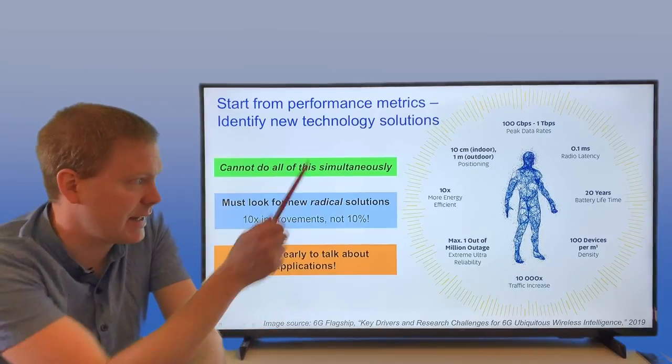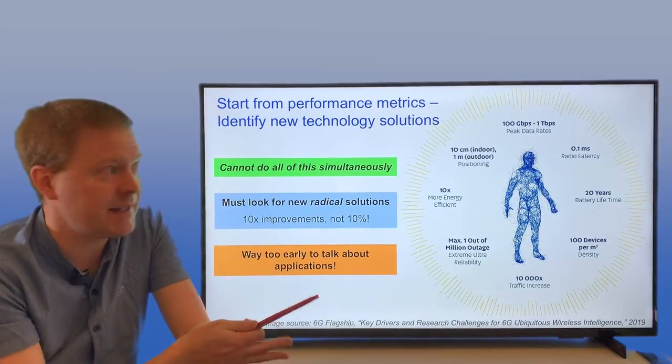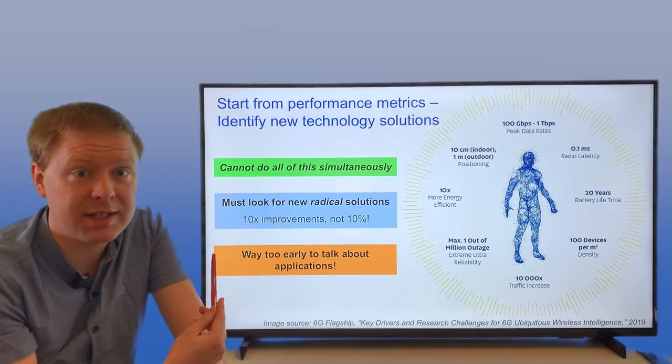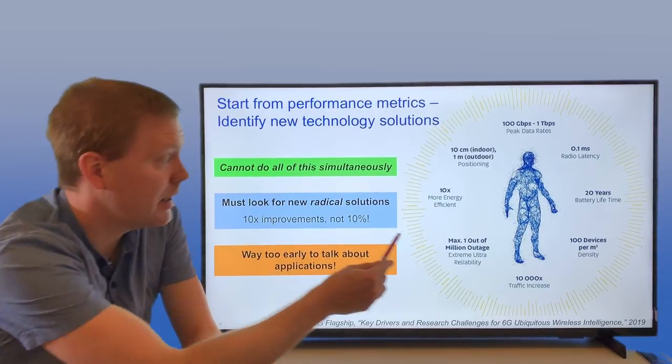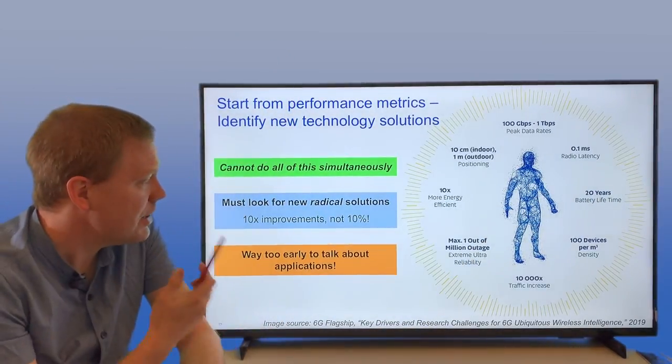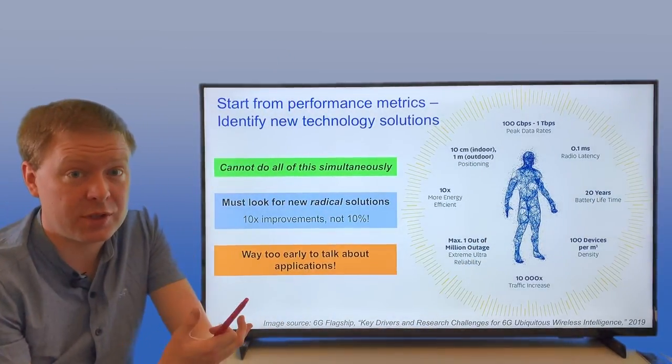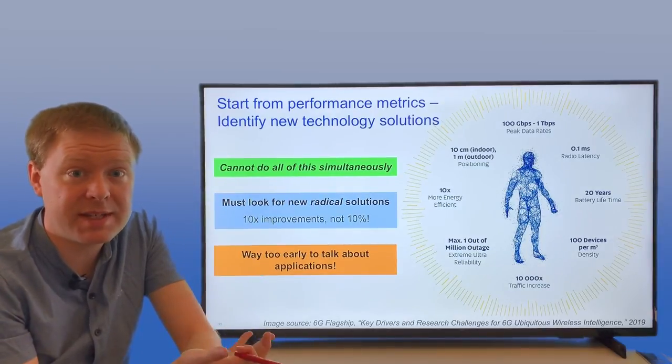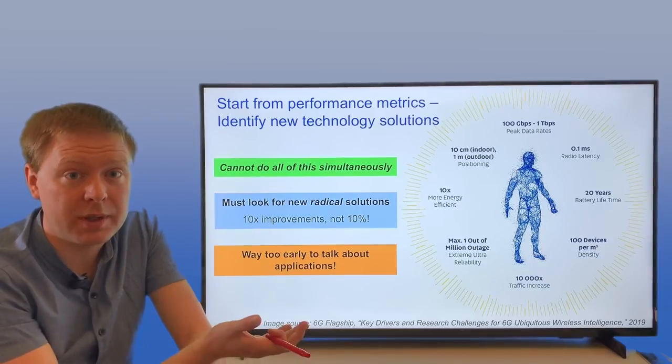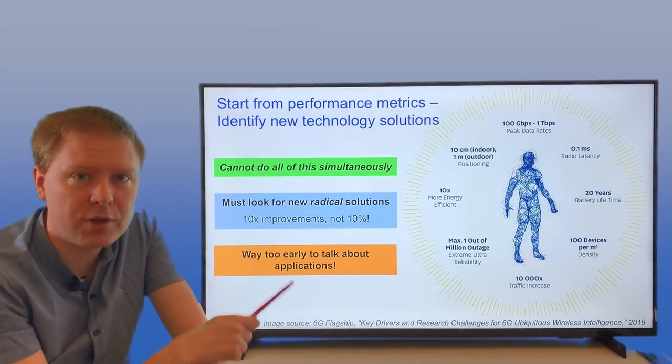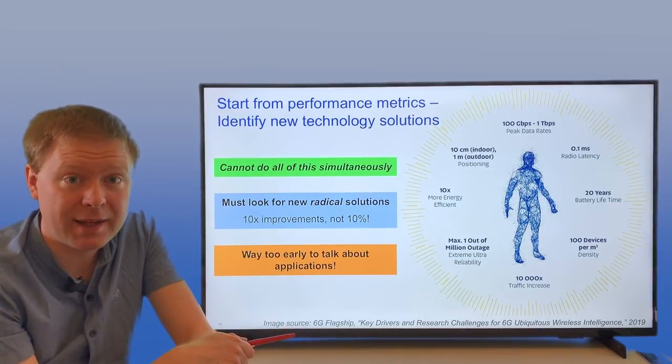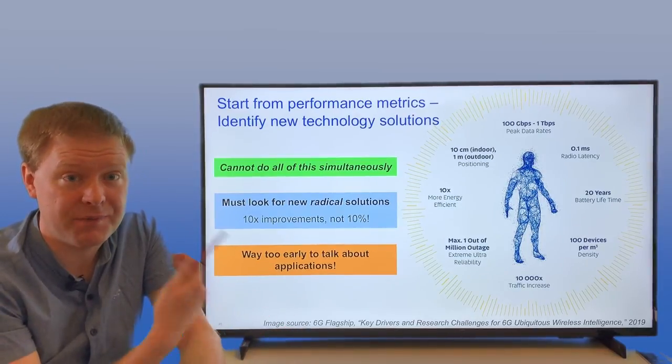We cannot of course do all these things at the same time. We cannot build a system that is able to do all these extreme things. We need to build a technology that can adapt itself depending on the use cases and move between different cases here. We need to look now for really radical solutions. If we in theory can demonstrate a 10% gain, maybe those gains will disappear when we move to a practical setup. We need to look for 10 times or 100 times improvements to reach something real in reality, something that is worth investing in.